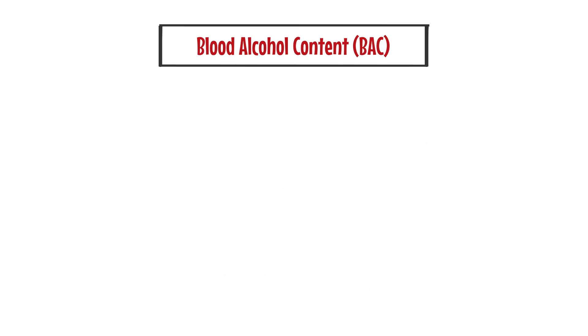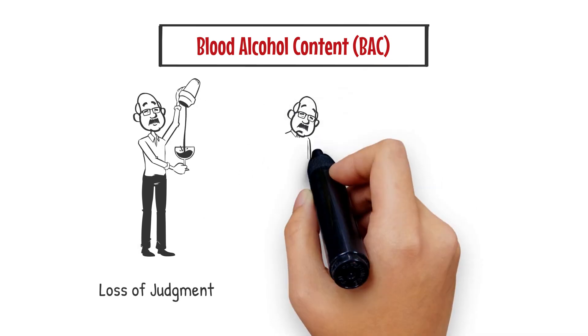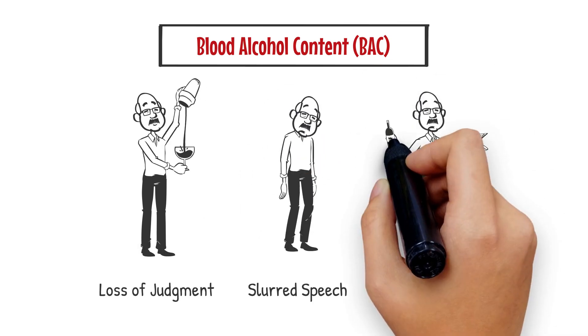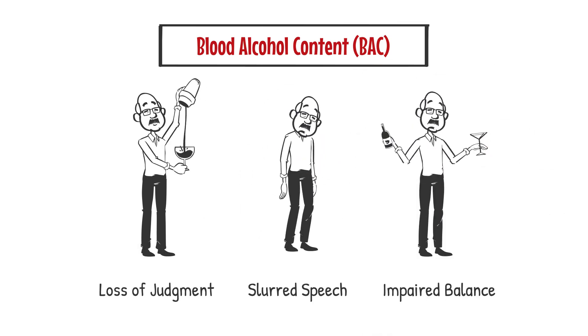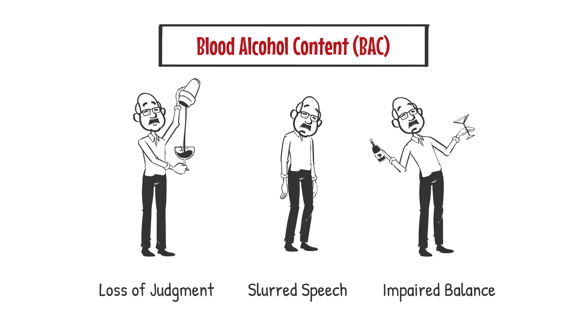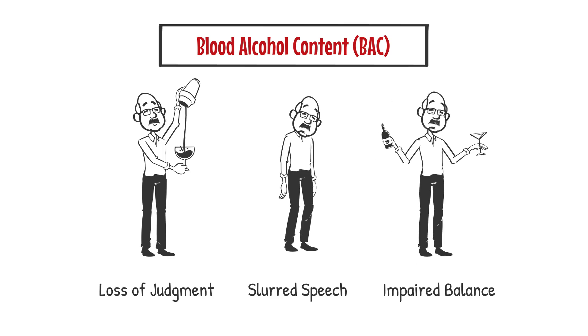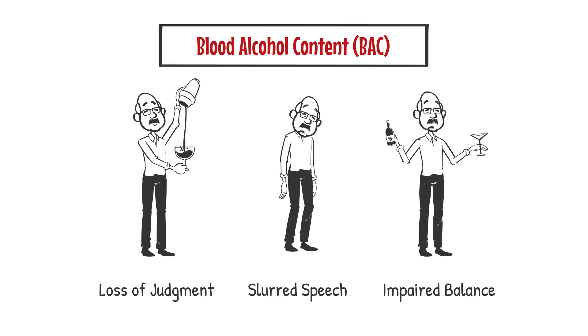Some of the impairing effects of alcohol include loss of judgment, slurred speech, and impaired balance. Alcohol behaves in a predictable manner in the body, and because of this we can answer different questions relevant to a case.